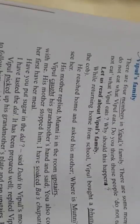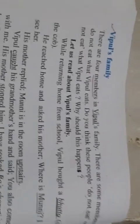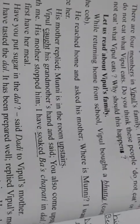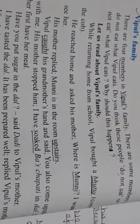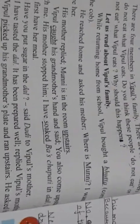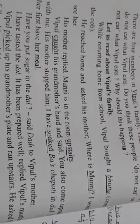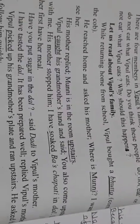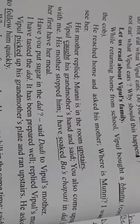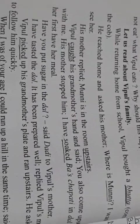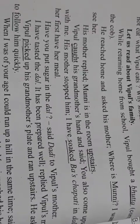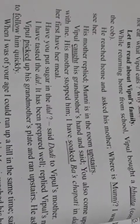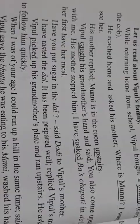Abhi kya hota hai? Ek din Vipul school se aata hai, bhutta lekar aata hai. Ghar aata hai, phir mammi ko puchta hai ki mammi Munni kahan hai? Mujhe usse dekhna hai. To mammi ne bola, ki Munni to upar hai. To Vipul apni dadi ka haath pakadke — chalo na.